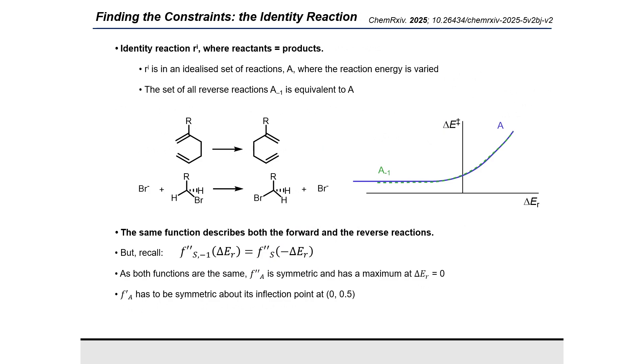Let's consider an identity reaction. This is a reaction in which the reactants and the products are identical. There are many such examples, but here I show you two of them: a degenerate cope rearrangement and an identical SN2 reaction.